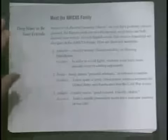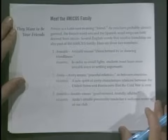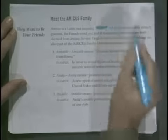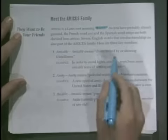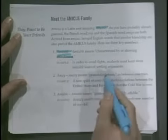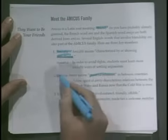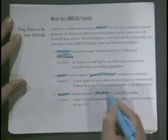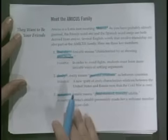Following are four more root families whose members regularly appear on the SAT. Meet the amicus family. Amicus is a Latin root meaning friend. Amicable means characterized by friendliness. Amity means peaceful relations, therefore friendliness between countries. Amiable means good-natured and friendly.